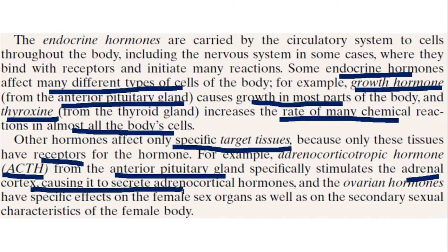ACTH specifically stimulates the adrenal cortex, causing the secretion of adrenocortical hormones. Another example is ovarian hormones — they specifically affect the female sex organs as well as the secondary sexual characteristics of the body. So these are all very specific in their activity.